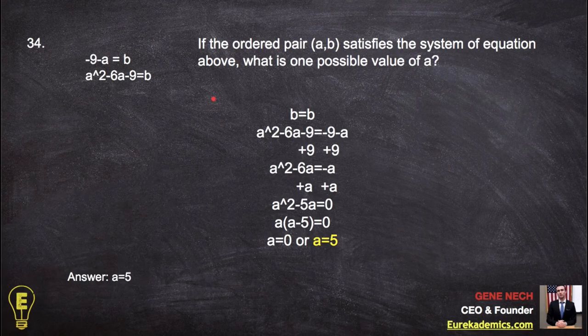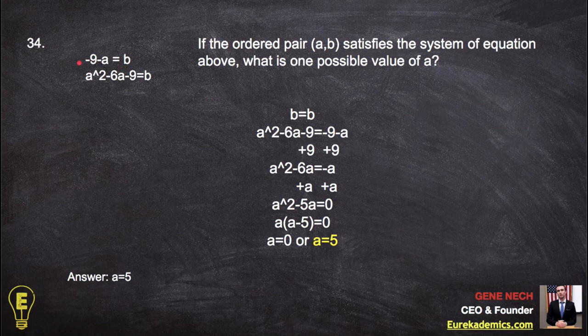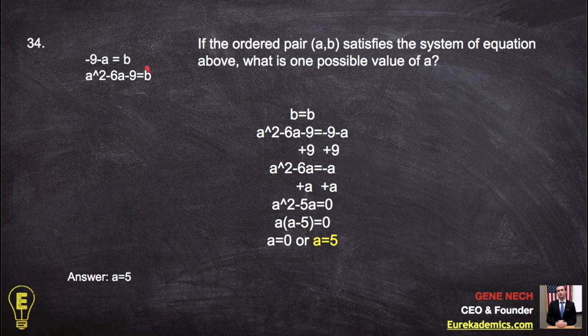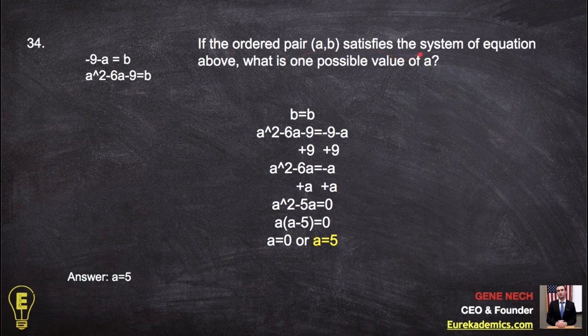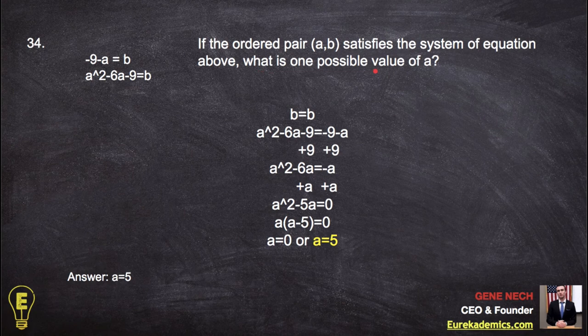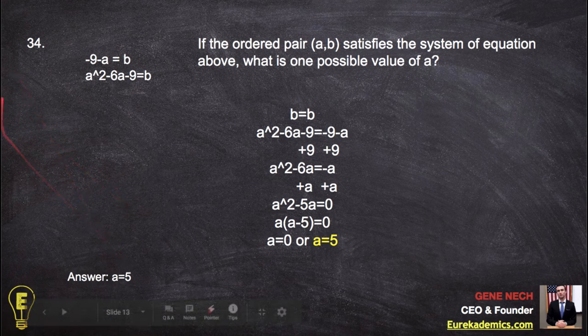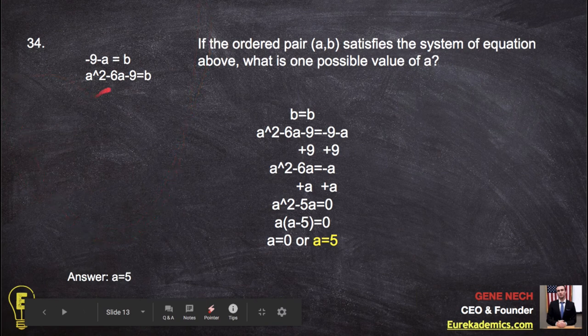Number 34. They gave us two equations. They're saying negative 9 minus a is b. They're saying a squared minus 6a minus 9 is also b. This has to jump out as an exciting thing for you. If the ordered pair ab satisfies the system of equations above, what is one possible value of a? What they're saying is, there's a point. So this is a line. a and b could have been x and y. This line looks like something like this. Let's say this line looks something like that.